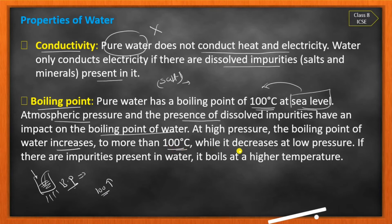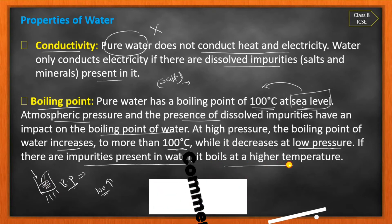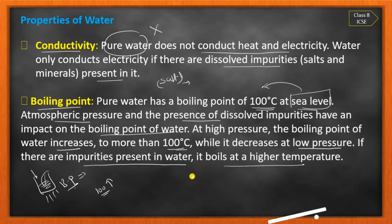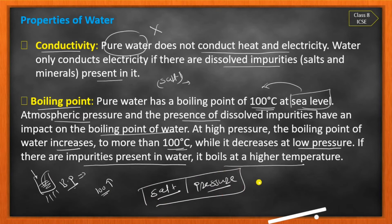At low pressure, the boiling point decreases. If impurities are present in water — dissolved salt or dissolved minerals — then water boils at a higher temperature. So at sea level the normal boiling point is 100 degrees Celsius, but dissolved impurities and atmospheric pressure can cause the boiling point temperature to increase or decrease.